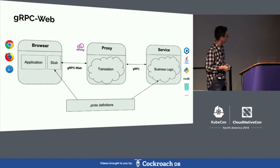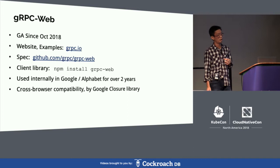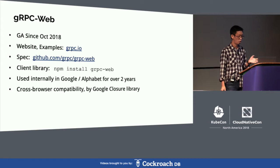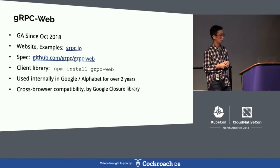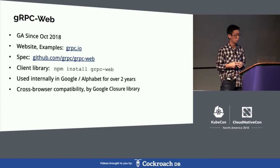In terms of the project update, GRPC Web has been 1.0 GA since a couple months ago. We went through a long alpha and beta process, so this is ready to use — we love your feedback. The key website is grpc.io, where you can see more details about the project and try an example.